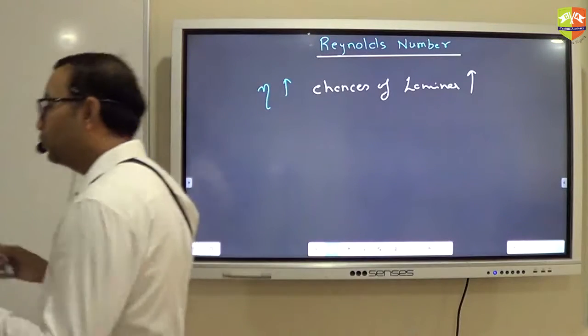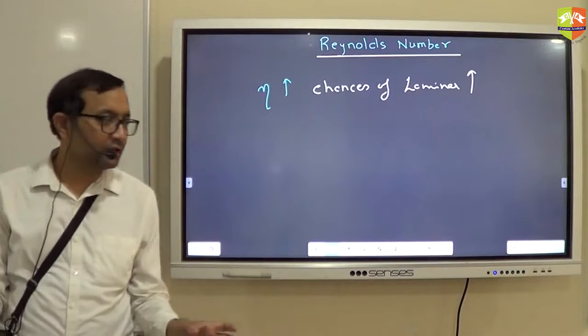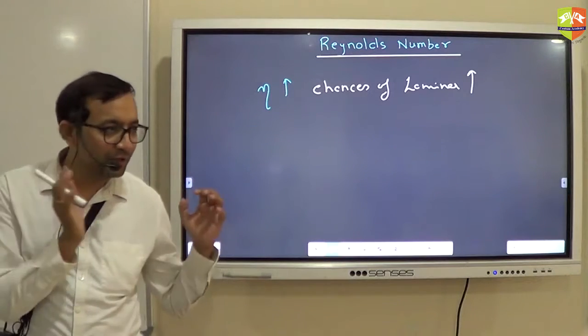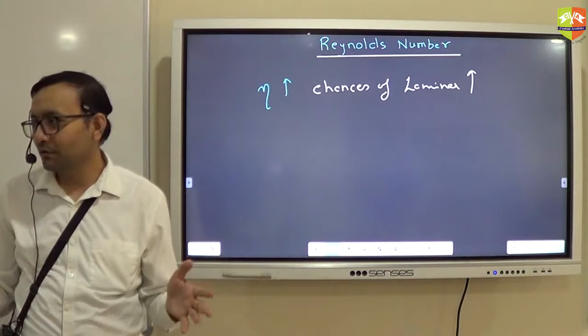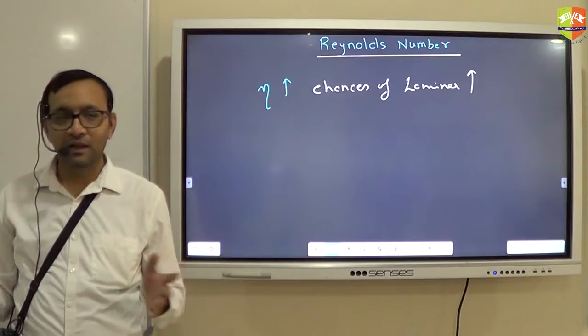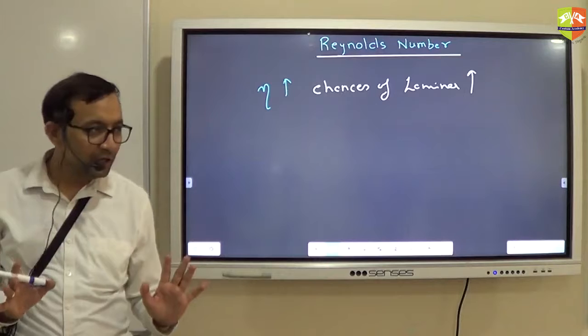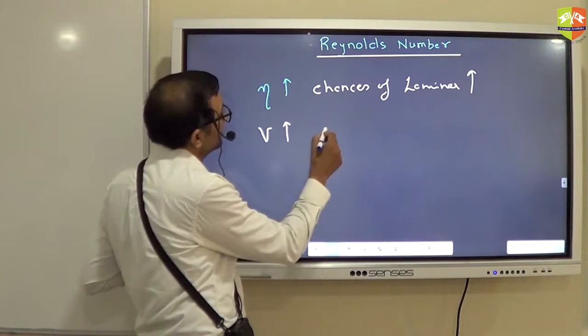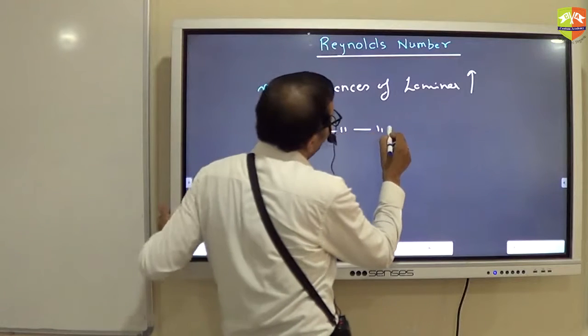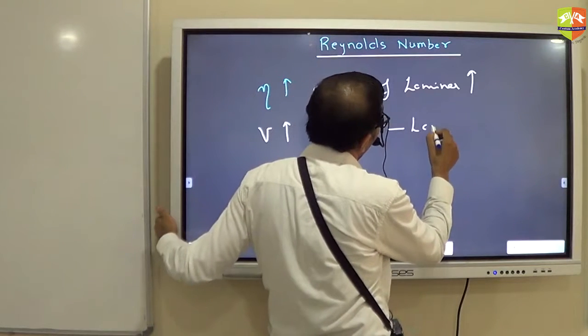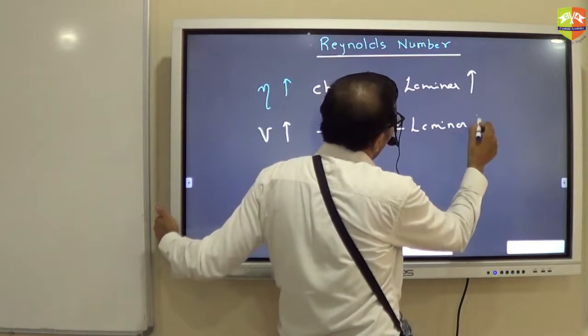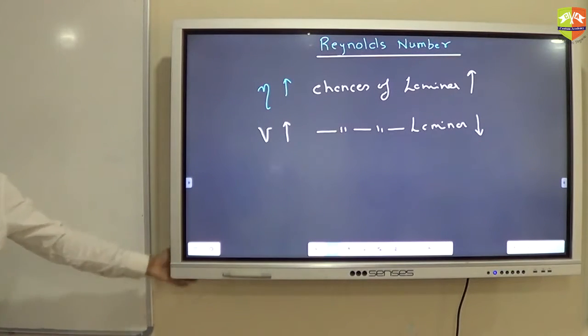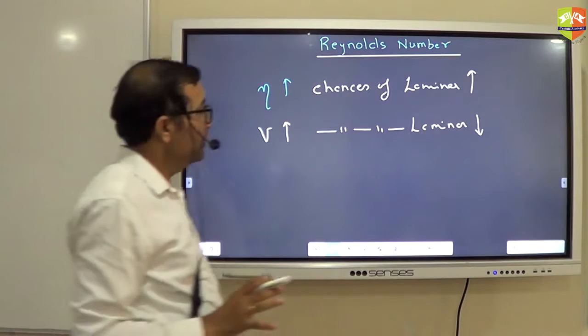Now tell me, if two fluids having the same viscosity, one is moving with higher velocity, other is moving with lower velocity, where are the chances of turbulence more? Higher velocity. Right? So this is a straightforward thing. If velocity increases, chances of laminar flow go down.